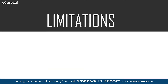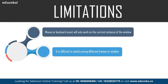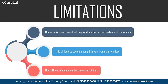Now let's look at the limitations of the robot class. The mouse or keyboard event will work only on the current window — it is difficult to switch among different screens or windows. If code execution moves to another window, the mouse or keyboard event will still act on the previous window. Methods like mouseMove depend on screen resolution, so using XY coordinates may behave differently on different screens. If you're running tests in a virtual machine, script failure rate is higher.